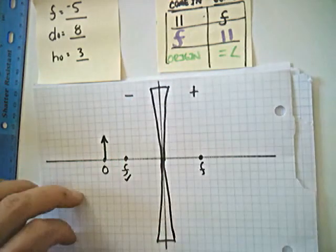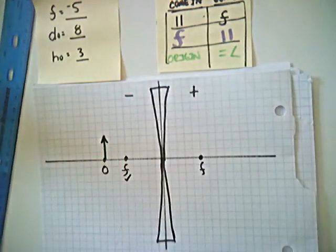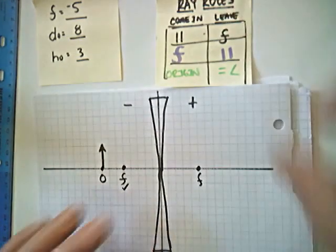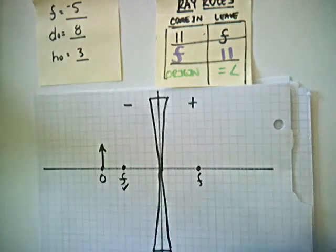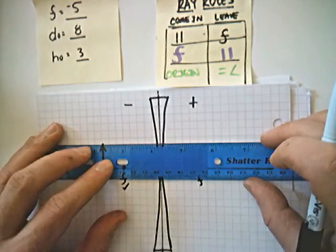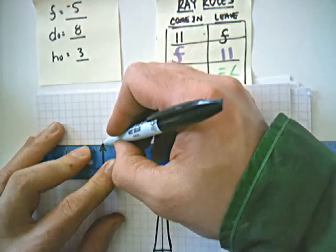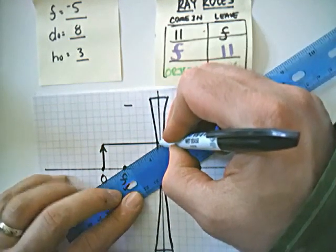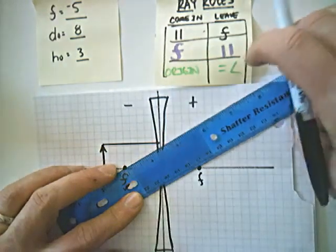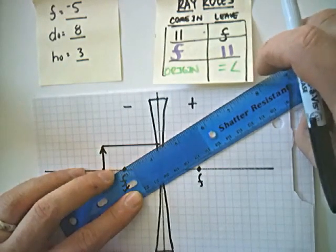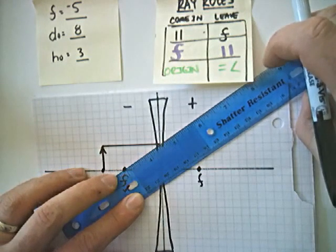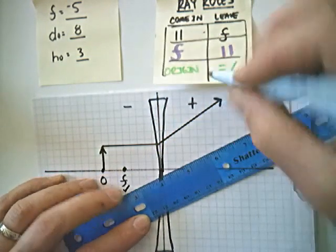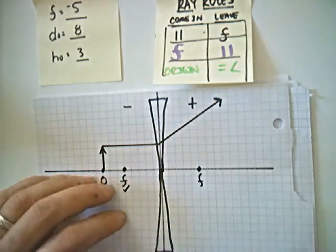All our rays will begin at the top of the arrow. We're going to follow our three ray rules. Ray rules are based on how it comes in and then how it leaves. So the way we come in to start is we're going to come in based on parallel. And then we're going to leave so that we line up here with the negative focal. Now, once we've used that focal, we won't use it again. It's a one-time deal.